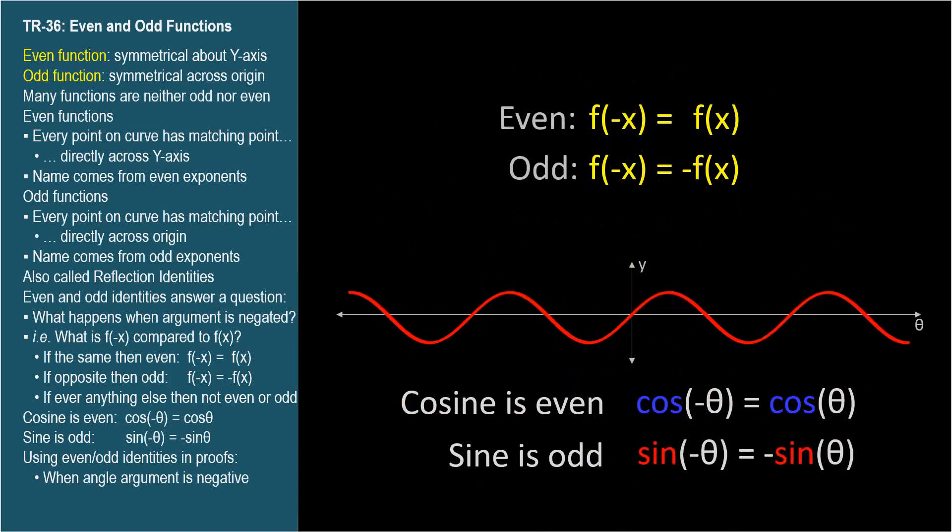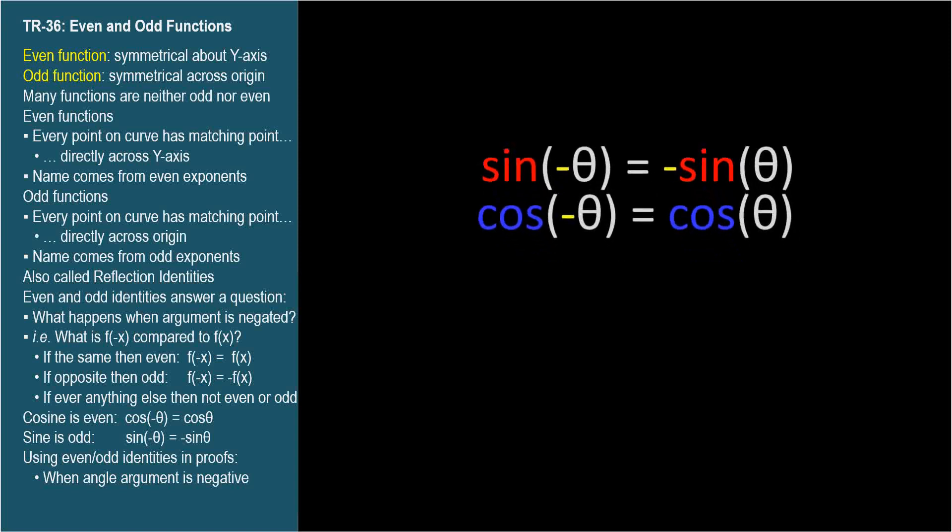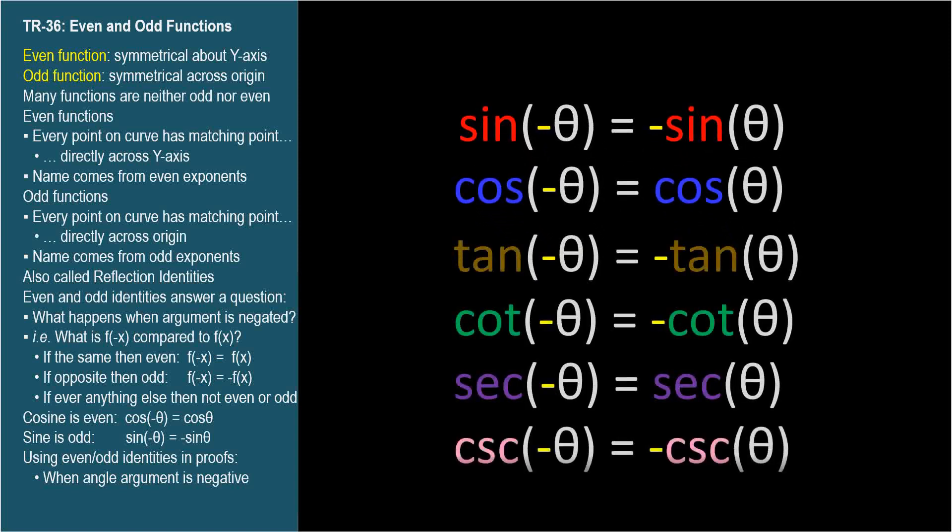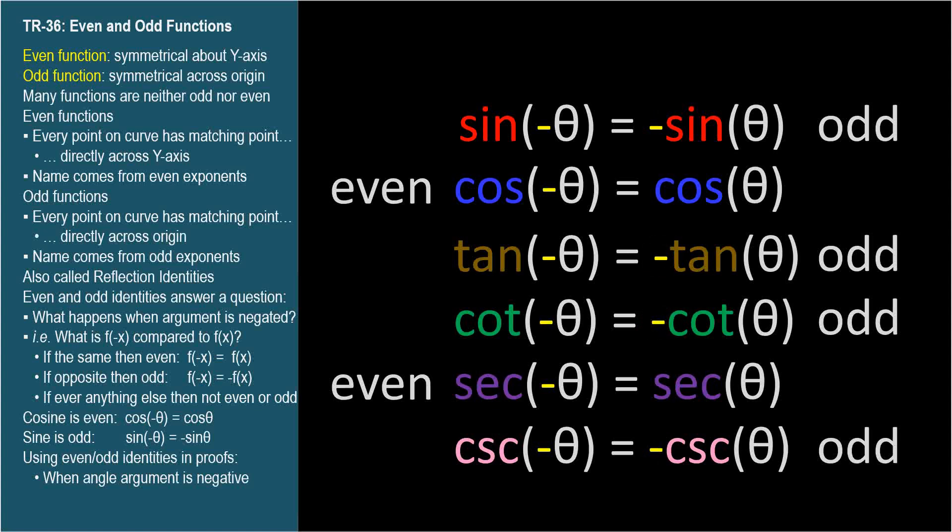In fact, cosine and its reciprocal, secant, are the even trig functions. The other four trig functions are odd. We'll focus on sine and cosine since, as we know by now, the others can be expressed in terms of sine and cosine.